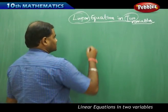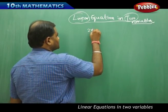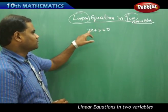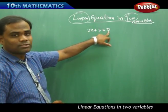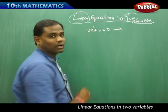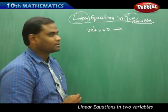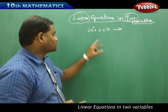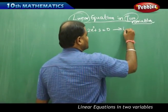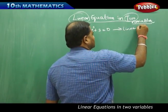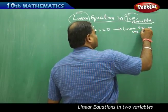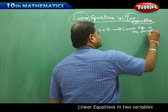Say for example I take 2x plus 3 equal to 0. This equation is called a linear equation because the highest power of x is 1, so it must be linear. And it is a linear equation in one variable because I find only one unknown which is x. It is an example of a linear equation in one variable, which is x.